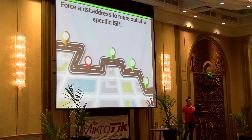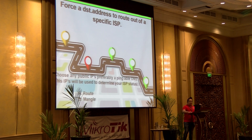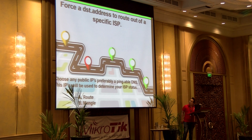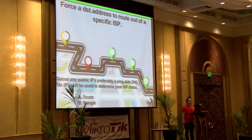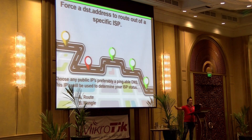So we will force a destination address to route out of a specific ISP. We will choose any public IPs, preferably a pingable DNS, that we will be using to determine the status of our ISP. We will assign one for ISP1, ISP2, and ISP3. And if it's not pingable, that will indicate the status of the ISP is down.